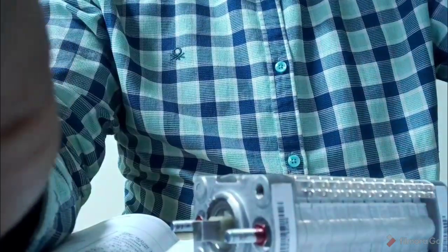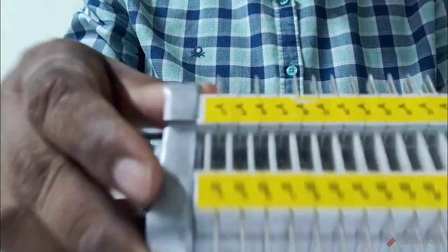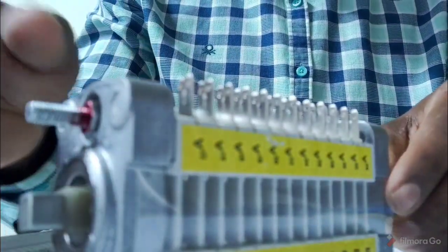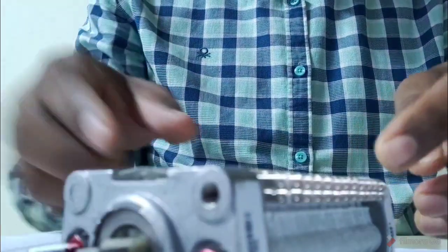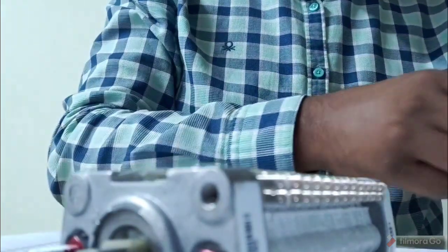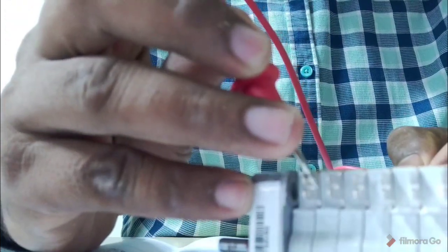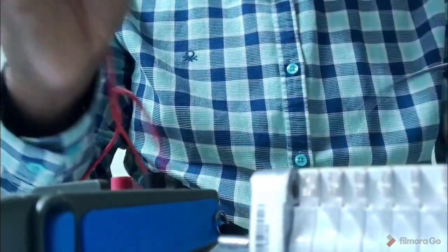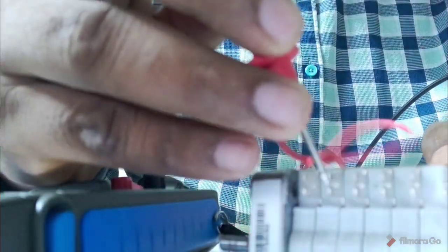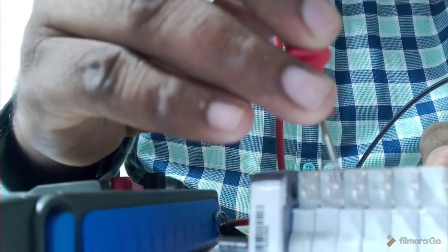I'm connecting the B contacts now. Using a multimeter, I'll check for continuity between these terminals. We get continuity here, and the next pair also shows continuity, and the next as well.